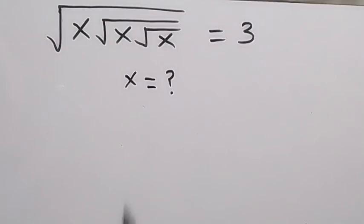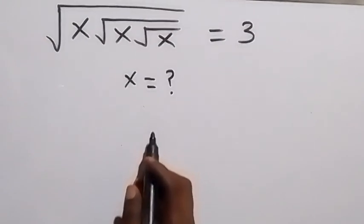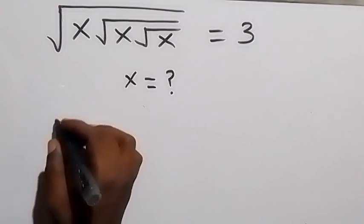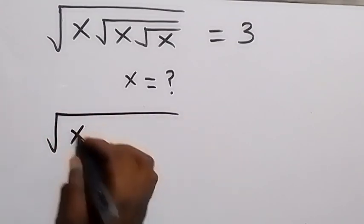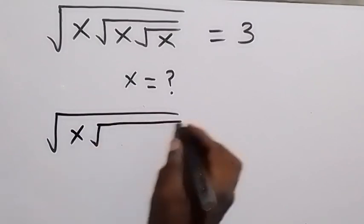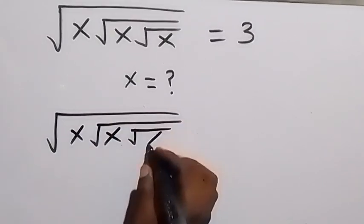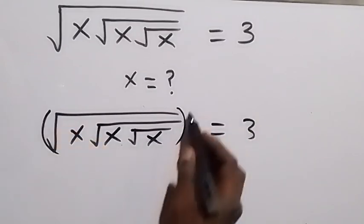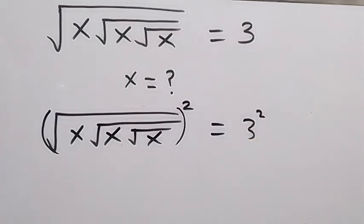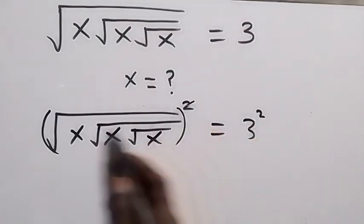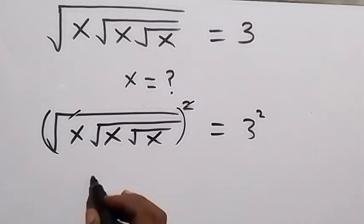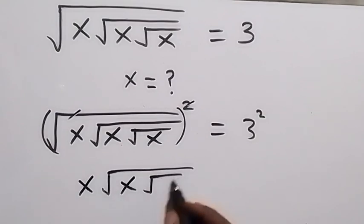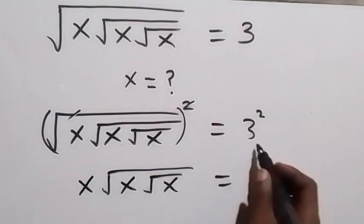Hello, you are welcome. How to find the value of x in this nice algebra problem. From here, on the left side we have square root of x, square root of x, then square root of x, equals to 3. We square both sides — the square cancels the square root — and this becomes x root x, then root x equals to 9.